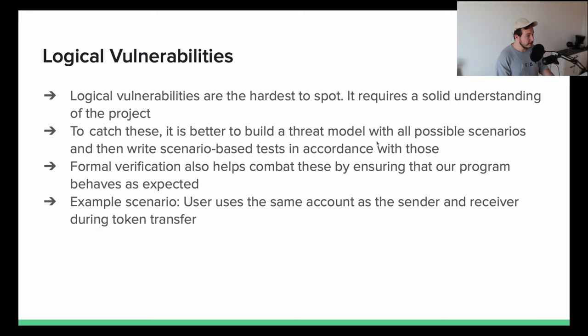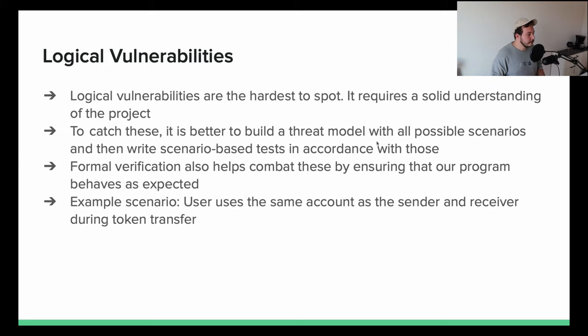Logical vulnerabilities are the hardest to spot because they require a solid understanding of the project — how it's built, what its purpose is. You have to read documentation; you cannot just go and read the code line by line. A logical vulnerability might occur if you call a couple of functions together — you call function A, then function B, and then it lets you call function C to exploit the contract.